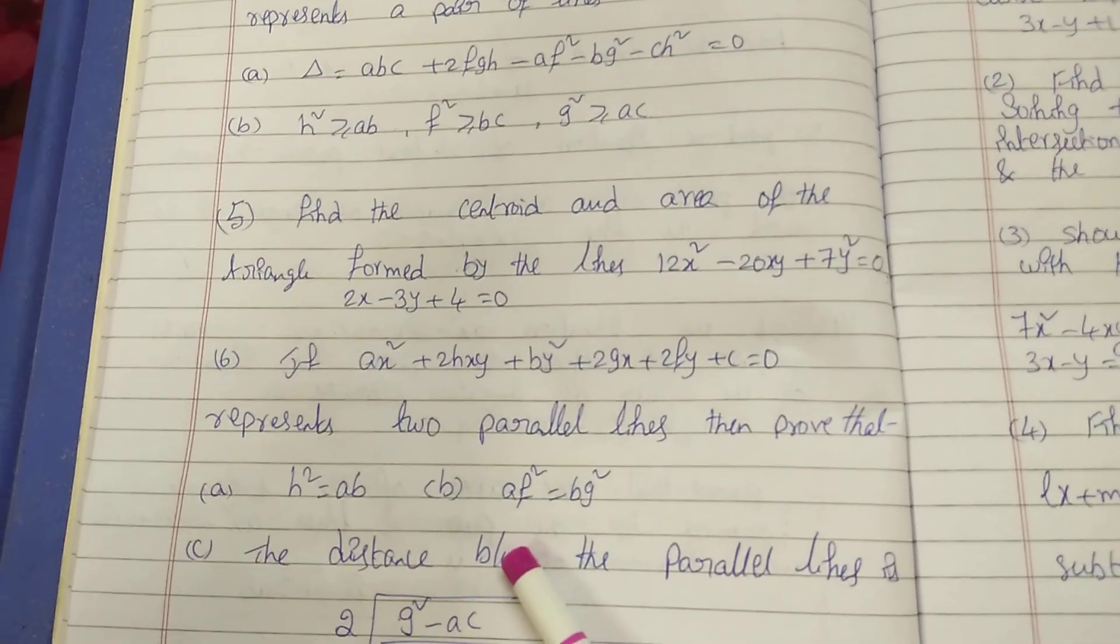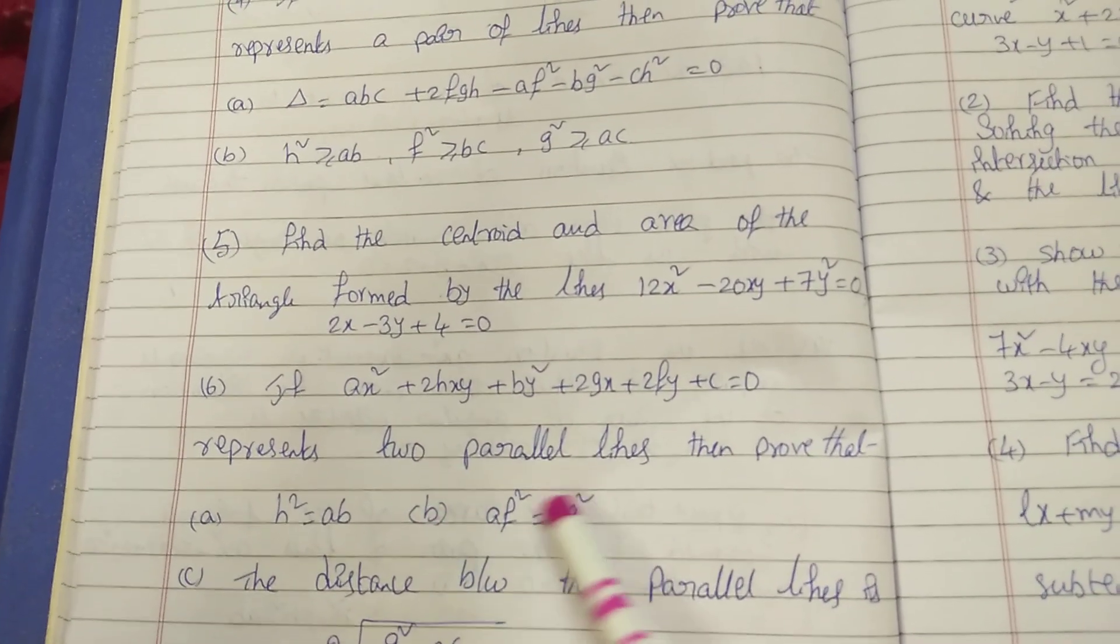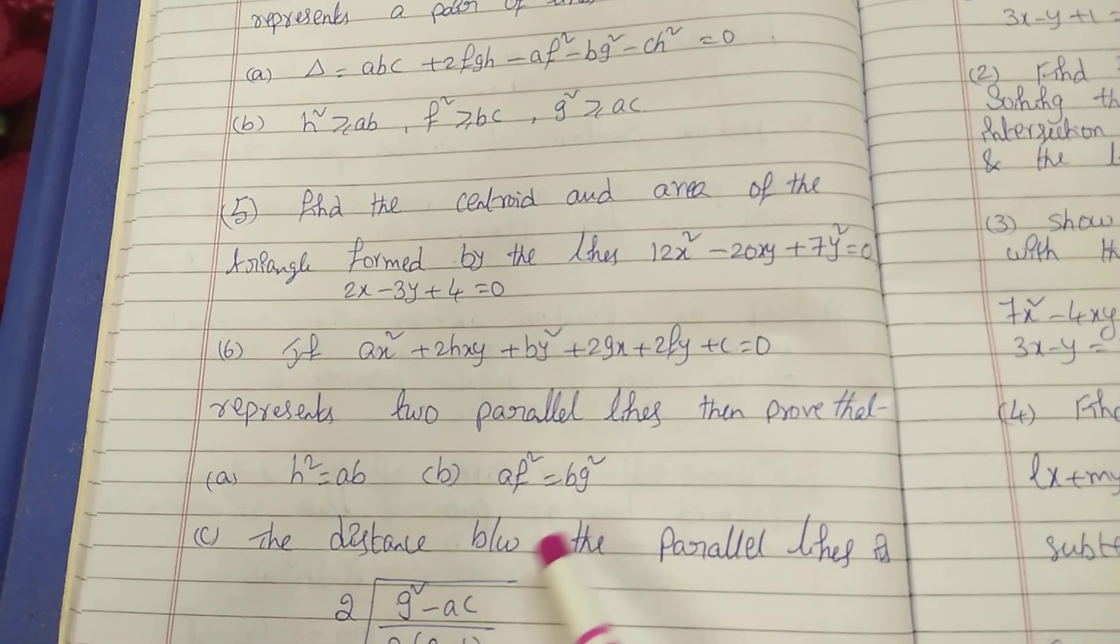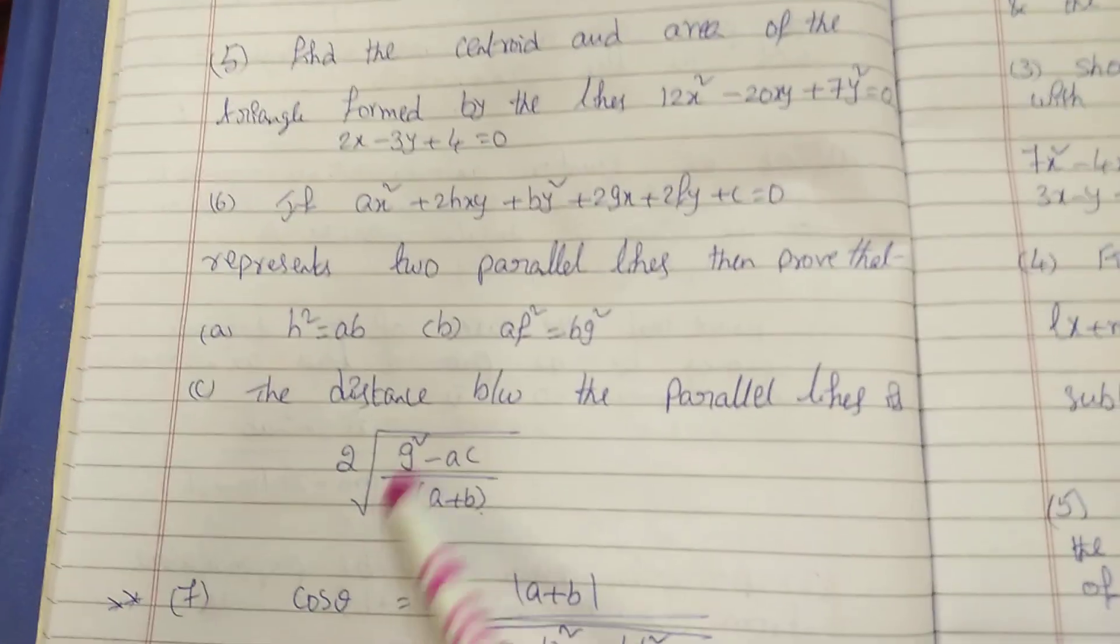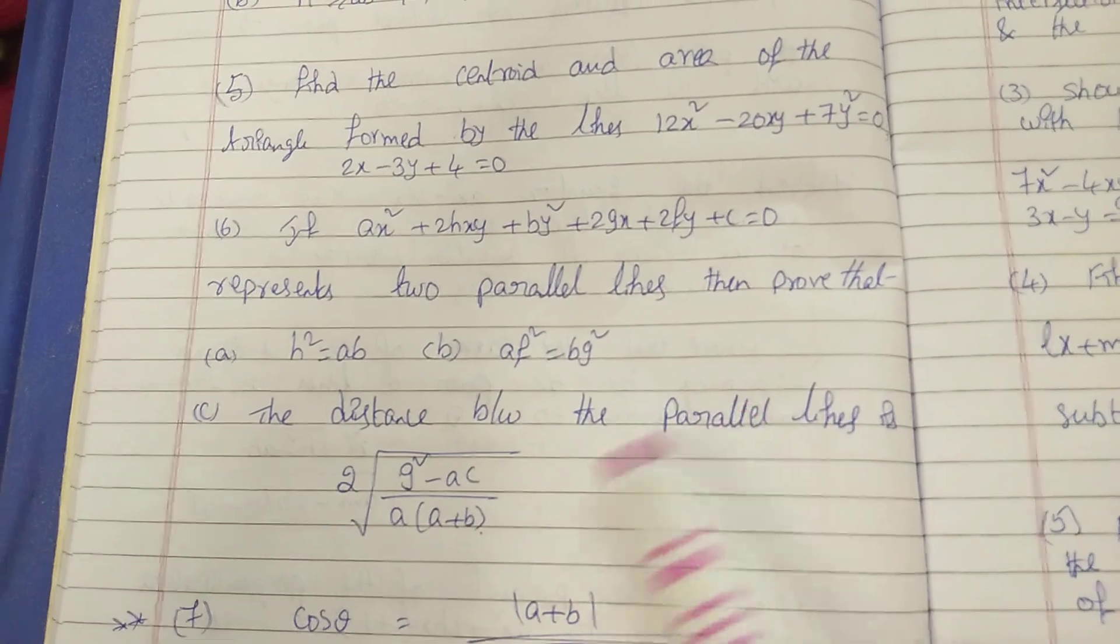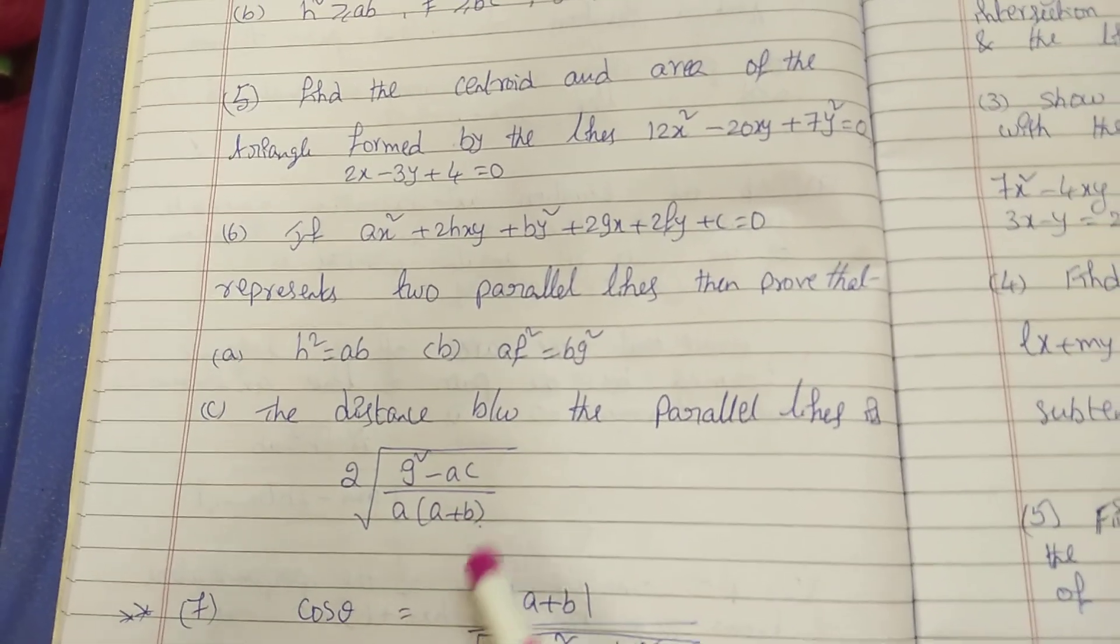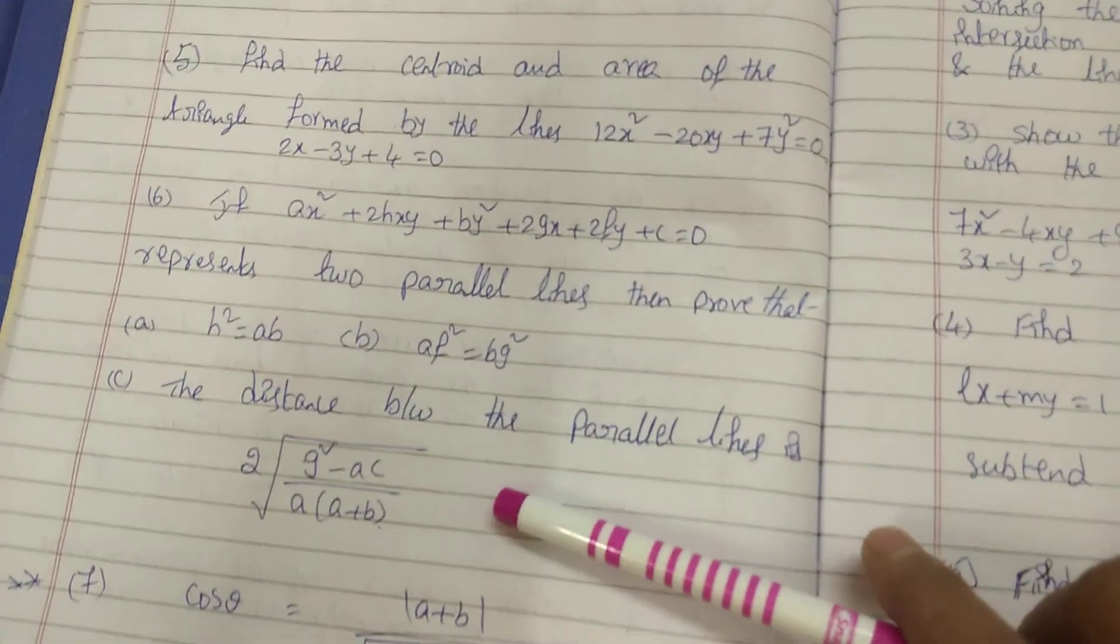One theorem. 2 parallel lines. Formula: h square equal to AB, f square equal to b, g square. Third one: you have to prove. 2 into root of, and parallel lines distance formula: 2 into root of g square minus ac by a into a plus b. In 19th bit, there are chances.